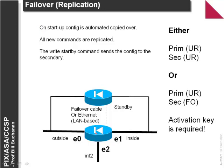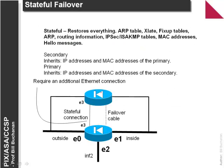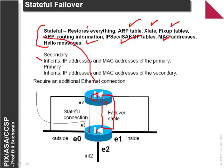For replication, we need to copy the configuration from one firewall to the next — the 'write start by' command is used to write from the primary to the secondary. We can also have stateful failover, where the failover cable automatically monitors all connections on the primary and replicates them on the secondary. The replicated information includes ARP tables, NAT tables, fixup tables, routing information, IPsec, MAC addresses, and hello messages. The secondary inherits all the IP addresses and MAC addresses of the primary, so users will not feel any difference.